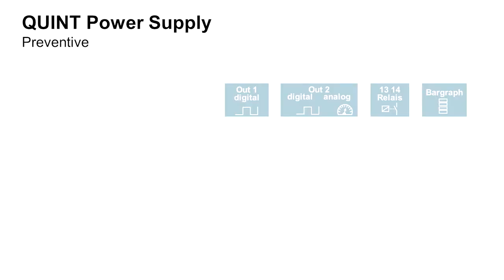There are many more opportunities to monitor your own system. The Quint Power has three signal contacts and a bar graph. Out 1 is a digital contact. Out 2 can be used as both a digital and an analog contact. And last but not least there is the relay contact. The bar graph is there to indicate the output power.